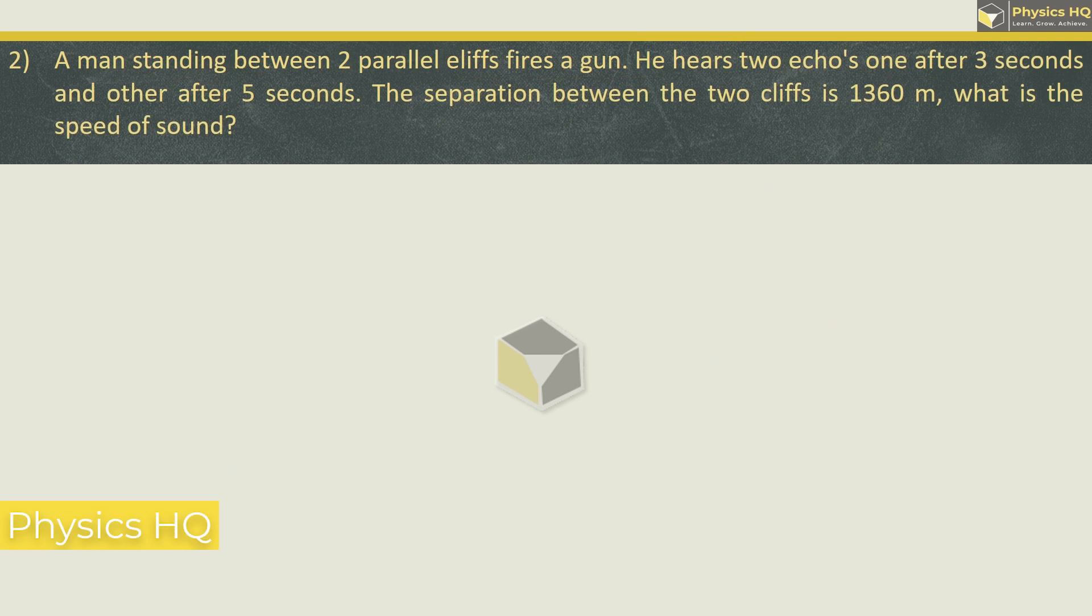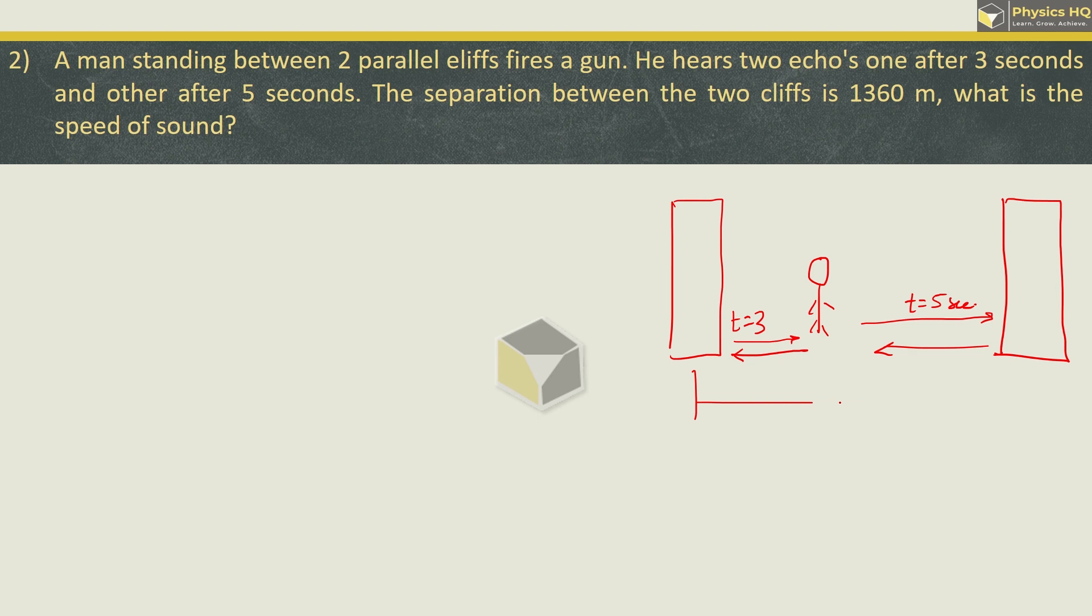Next we have a sum. A man standing between two parallel cliffs fires a gun. He hears two echoes, one after three seconds and other after five seconds. The separation between the two cliffs is 1360 meters. What is the speed of the sound? We have a cliff here and a cliff here. For simple understanding there are two walls. The gunshot ka sound will reflect. Now man is somewhere in between.